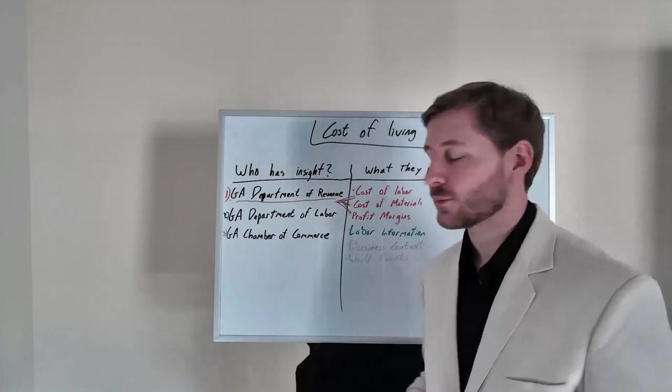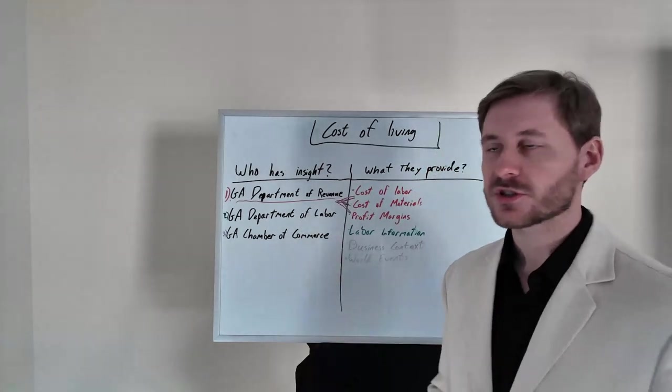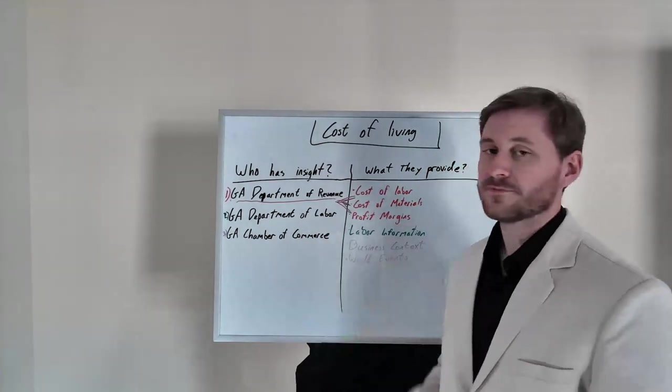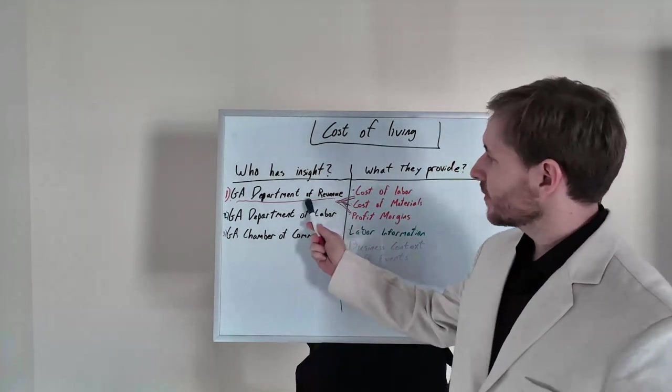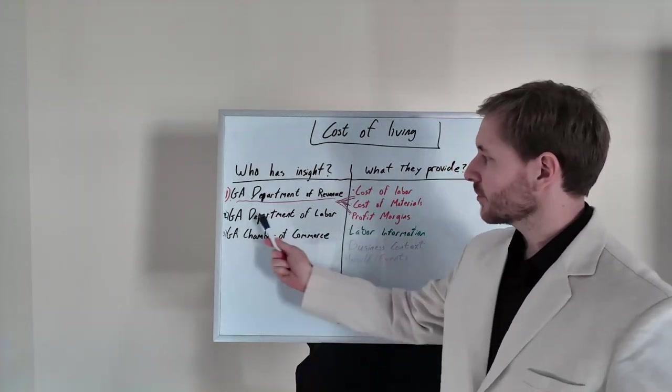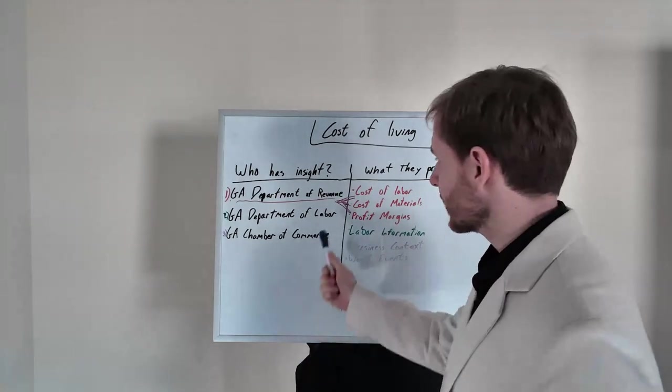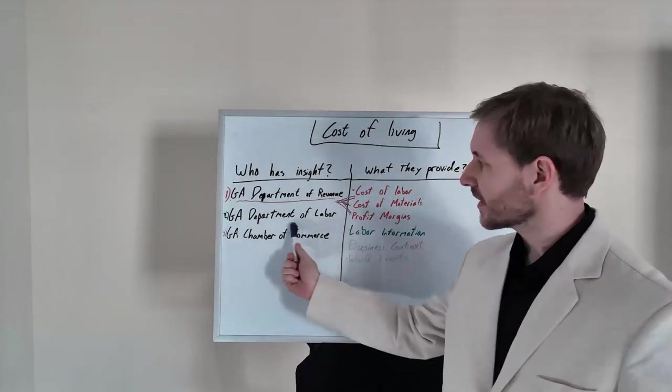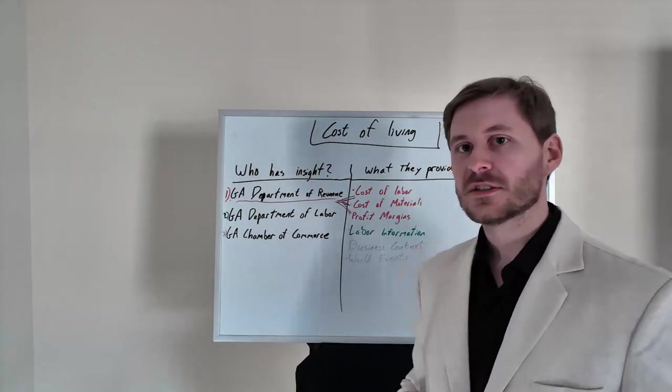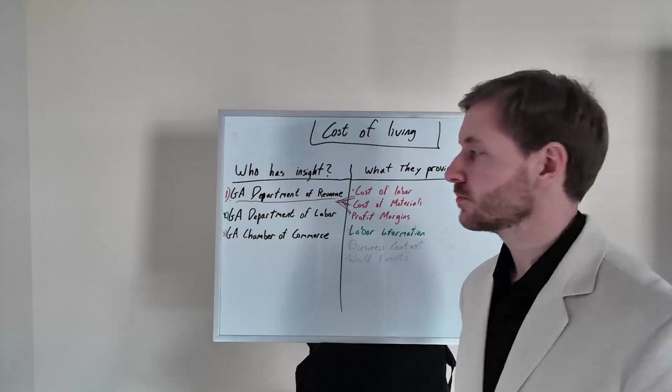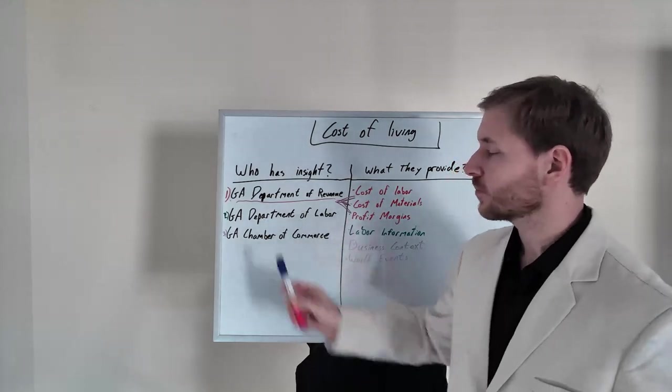Department of Labor. Another example. This is not an exhaustive list. We're just starting. Department of Labor provides labor insights, labor availability. Really, the Department of Revenue is going to provide the numbers. And from here on down, we're going to provide context. Labor is expensive. Why is labor expensive? Department of Labor. Is there a labor shortage? Is there a lack of labor training? Do we need more training? They provide context into the picture.